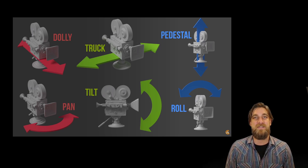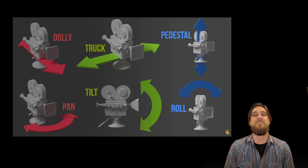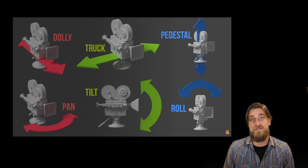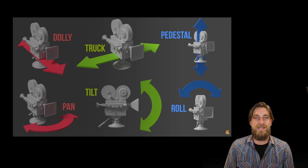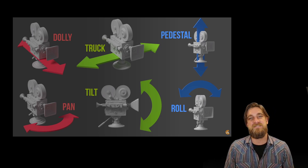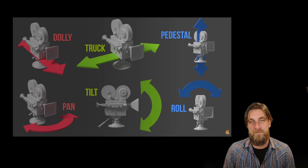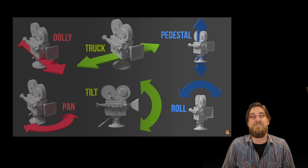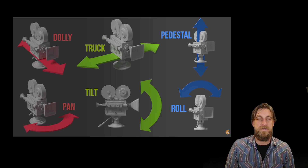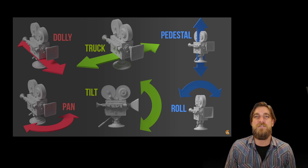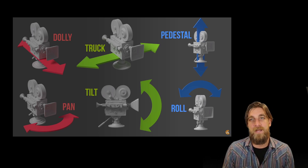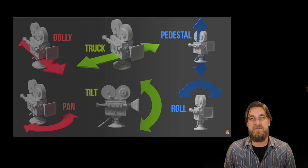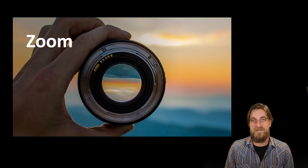Now let's talk about actually physically moving the camera. The dolly is when you push the camera forward or backward — towards or away from your subject. The truck is when you move the whole physical camera setup to the left or to the right. Pedestal is when you lift the camera up or push it down, and that's often harder to achieve with a traditional tripod, so you'd use a crane or a gimbal.